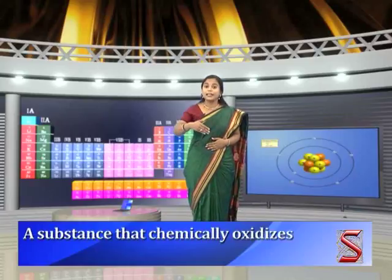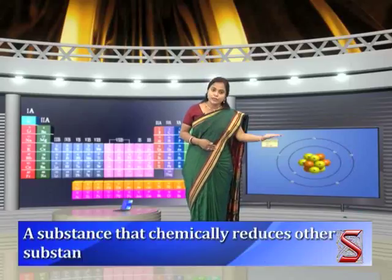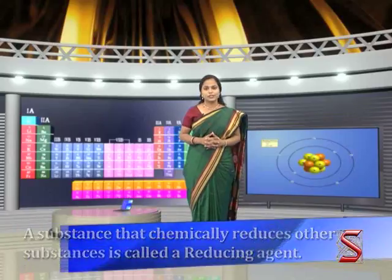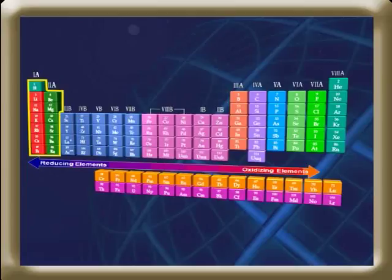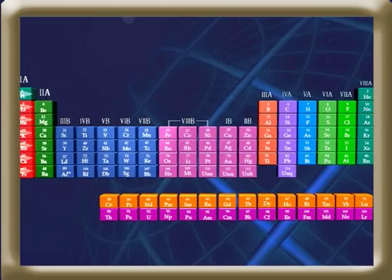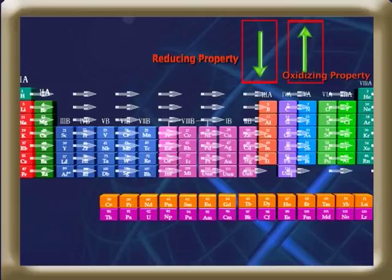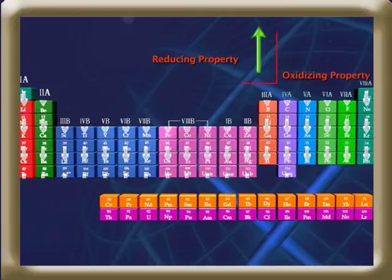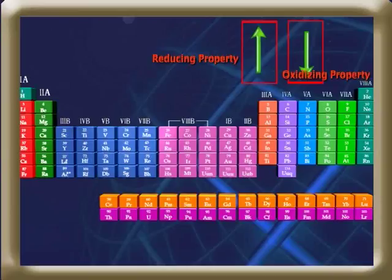A substance that chemically oxidizes other substances is called an oxidizing agent. A substance that chemically reduces other substances is called a reducing agent. The elements present on the left side of the periodic table — for example, groups 1 and 2 — are strong reducing agents. Moving from left to right in a period, the reducing property decreases and the oxidizing property increases. Moving from top to bottom in a group, the reducing property increases and the oxidizing property decreases.